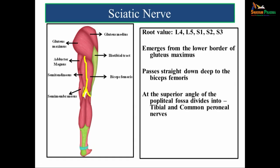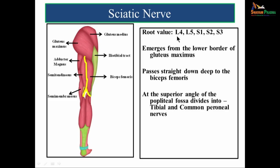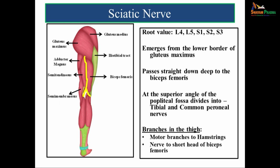A brief mention about the sciatic nerve: its root value is L4, L5, S1, S2, and S3. It emerges from the lower border of gluteus maximus, passes straight down deep to the biceps femoris, and at the superior angle of the popliteal fossa divides into its terminal branches - the tibial nerve and the common peroneal nerve. In the thigh, it gives motor branches to the hamstring muscles and to the short head of biceps femoris.